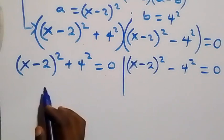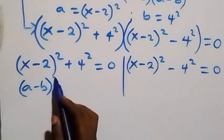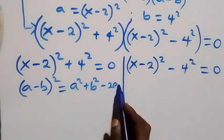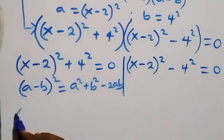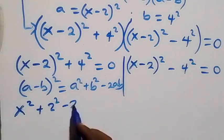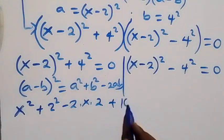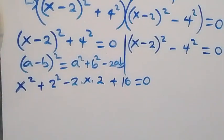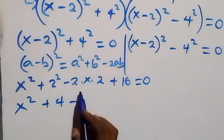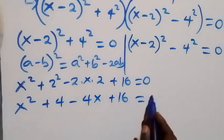Solving the first case, the expansion follows (a minus b) squared equals a squared plus b squared minus 2ab. So this becomes x squared plus 2 squared minus 2 times x times 2, plus 4 squared — that's 16 — equals to zero. That is x squared plus 4 minus 4x plus 16 equals to zero.